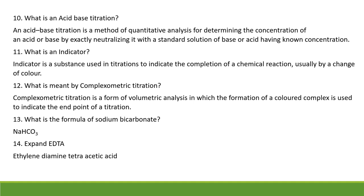What is an acid-base titration? It is the method of quantitative chemical analysis used for determining the concentration of an acid or a base. What is an indicator? It is the substance used in titrations in order to know the completion of a chemical reaction — this can be known by a change in color, which is noticed by the usage of an indicator.